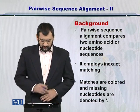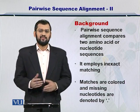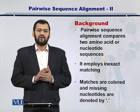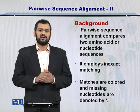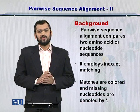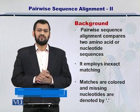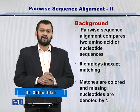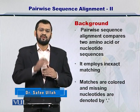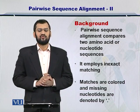Let's take a look at what we already know. Pairwise sequence alignment essentially means that you are trying to compare two sequences. The process involves inexact matching, where we consider some differences between the sequences. If there is an insertion or a deletion within the two sequences, then we create a dot in the alignment, which is called a gap.